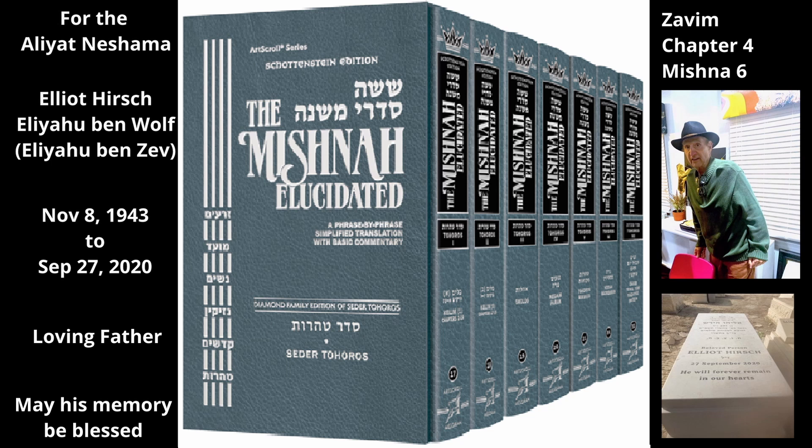The stringencies a Zav has over a corpse are that a Zav makes the bed and seat underneath him Tameh, to the extent that they transmit Tumah to a person who touches them and he in turn transmits Tumah to the clothes he is wearing. Also, a Zav makes items that are resting on top of him Tameh with a light Tumah — i.e. a Rishon level of Tumah — even if he does not touch them, and those items in turn are able to transmit Tumah to food and drink. But a corpse does not transmit Tumah in these ways.